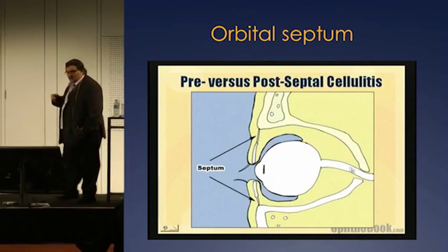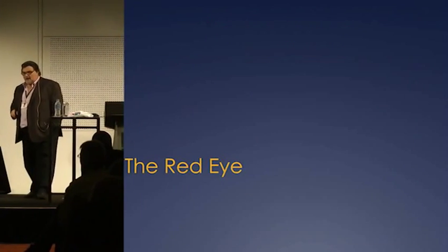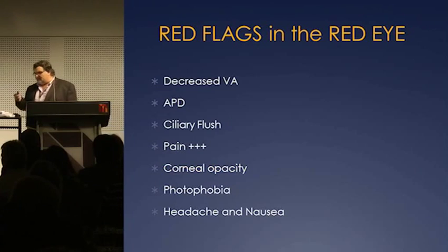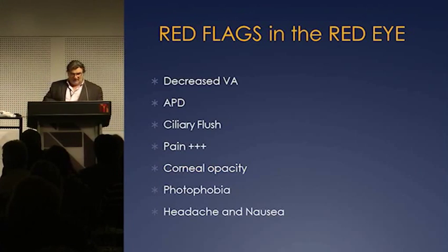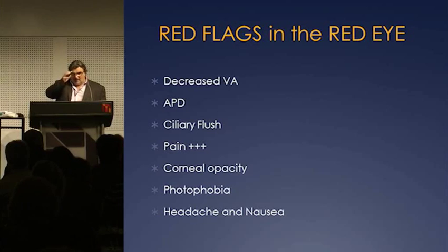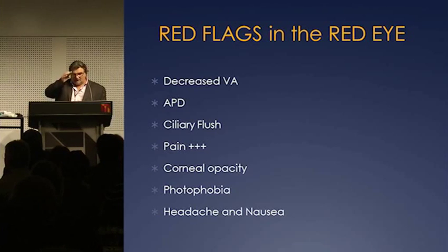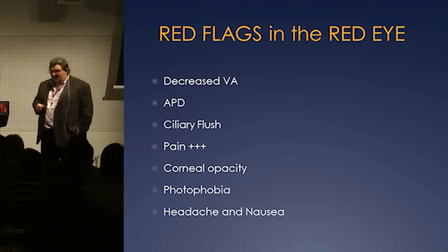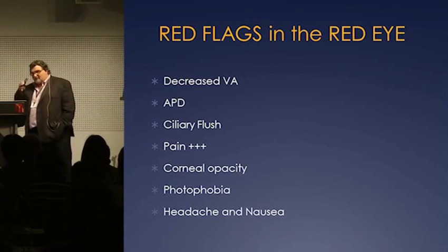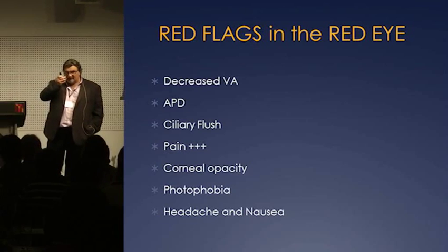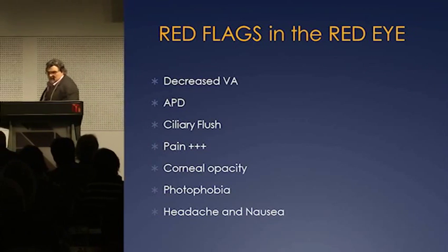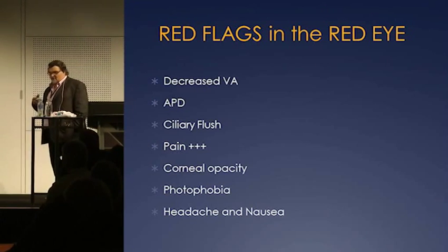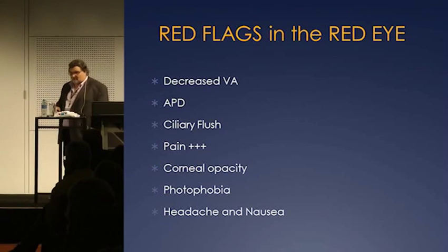Red flags for the red eye: decreased visual acuity, an afferent pupillary defect, a ciliary flush — a flushed redness that just circles the cornea. Remember, we speak about perilimbic sparing in Kawasaki's disease; this is the opposite — redness around the cornea. They've got significant pain, possible corneal opacity, photophobia, and headache and nausea can be eye signs. These are red flags.